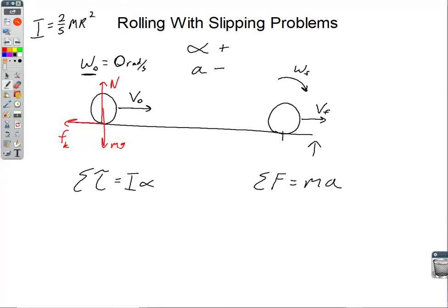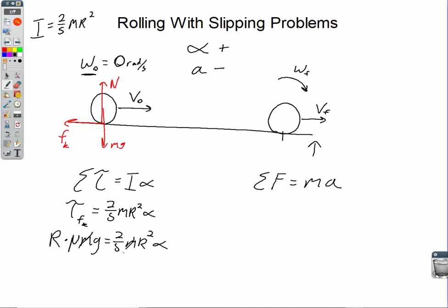Let's fill in net torque and net force. For the torque: since alpha is positive, the torque from friction is positive, so that equals two-fifths MR² times alpha. The torque from friction is R times the magnitude of the force, which is mu·Mg, and that equals two-fifths MR² alpha. The masses cancel and one factor of R cancels on each side, leaving: mu·G = two-fifths R·alpha.